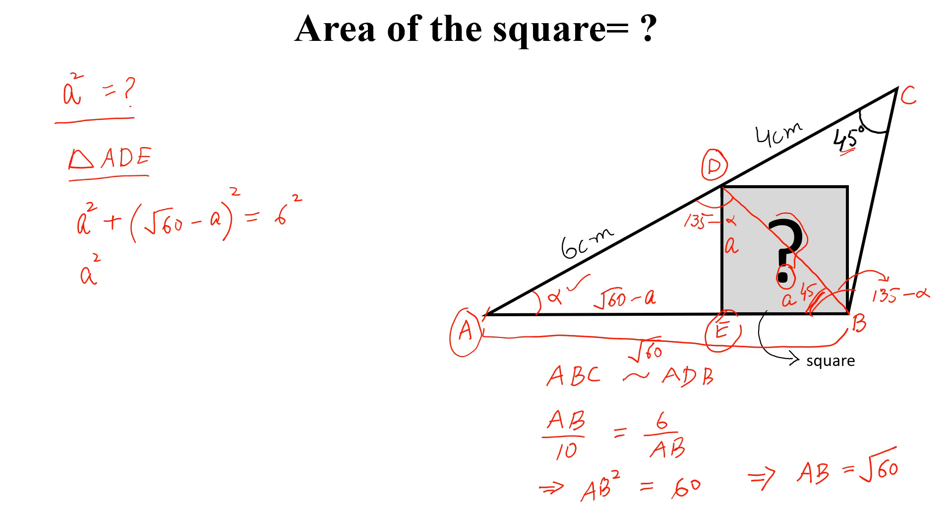We can simplify this: A squared plus square root of 60 plus A squared minus 2 into square root of 60 into A equal to 6 squared.